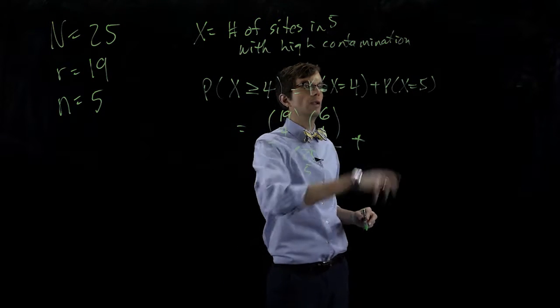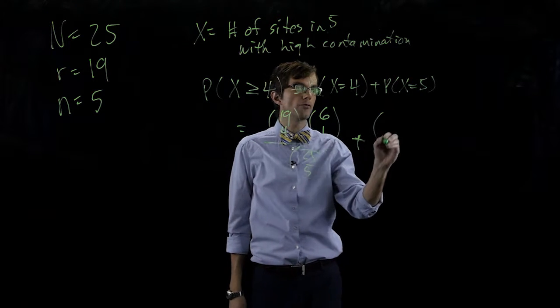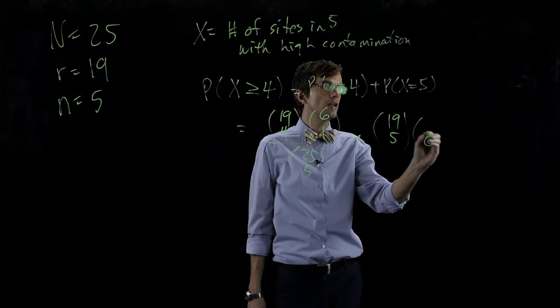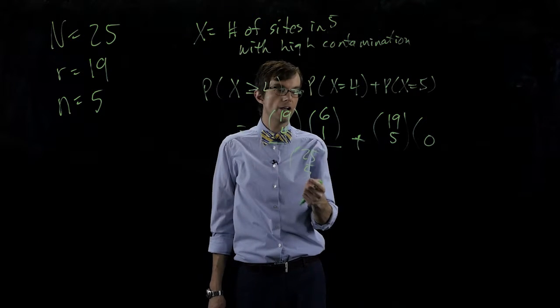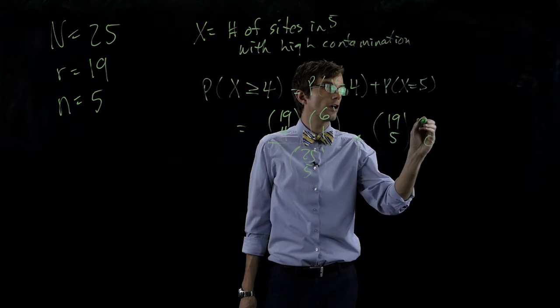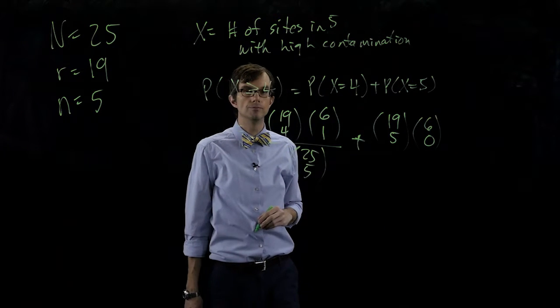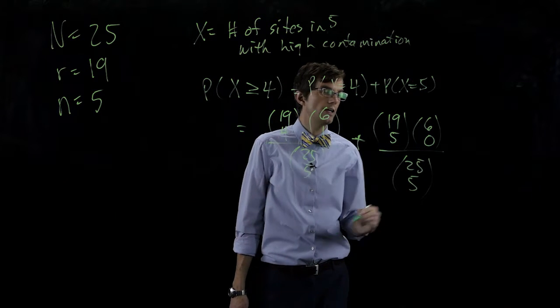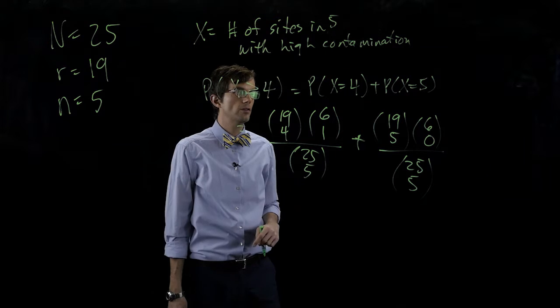Now we want the probability that X takes on the value five. So from those nineteen, we're going to pick five that are of high contamination. That must mean that the remaining number in the sample, zero, are going to come from low contamination. Then the number of ways to pick five out of twenty-five is in the denominator. Straightforward.